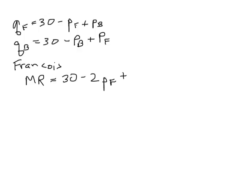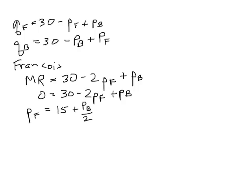But we don't double the slope on PB. That's his marginal revenue. It equals zero, the marginal cost. Then I'm going to add 2PF to both sides and multiply through by one-half, and I get PF equals 15 plus PB over 2.